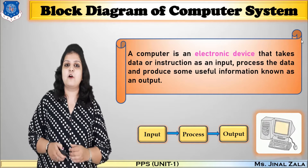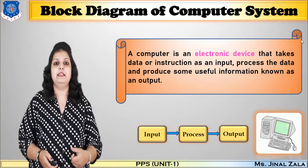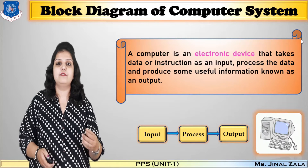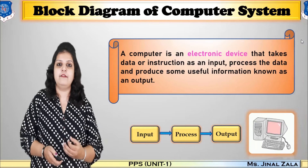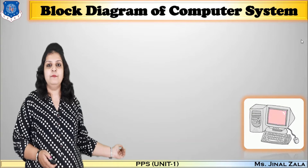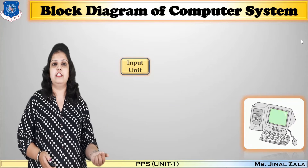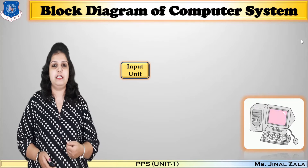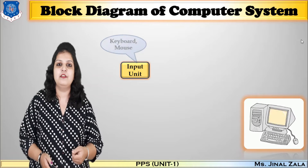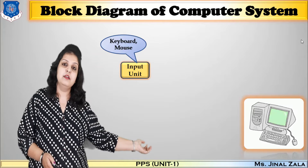A computer is a combination of hardware and software. Hardware is mainly divided into four major components, and we have to draw the diagram of these major components. First of all, we can enter input from keyboard and mouse, so the first unit is called the input unit. The input unit is used to enter data. Examples of input units are keyboard and mouse.